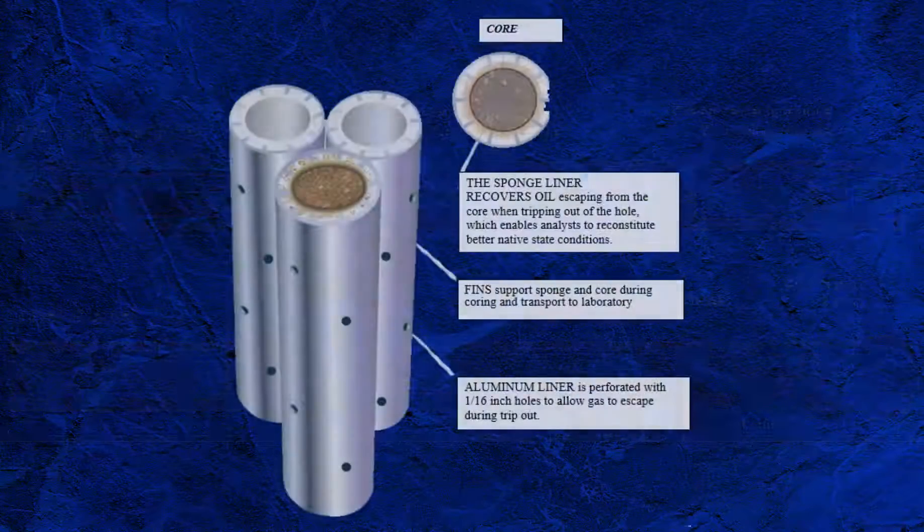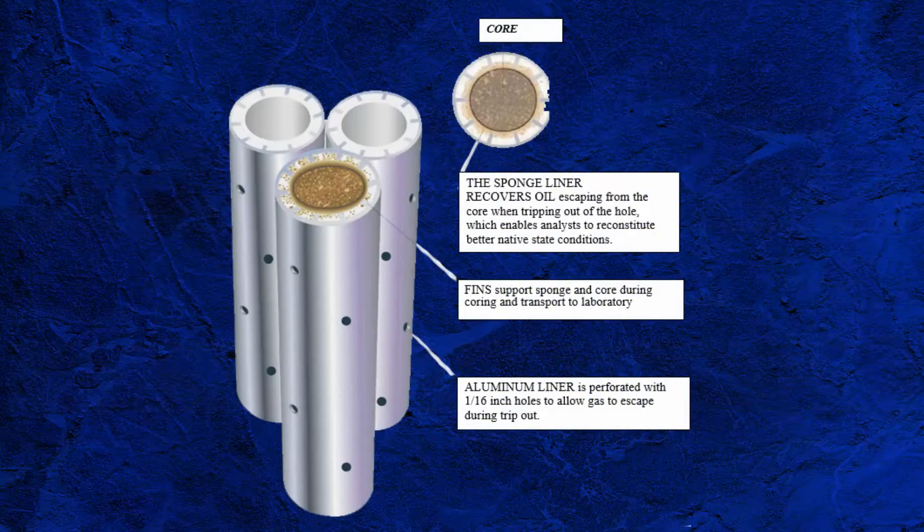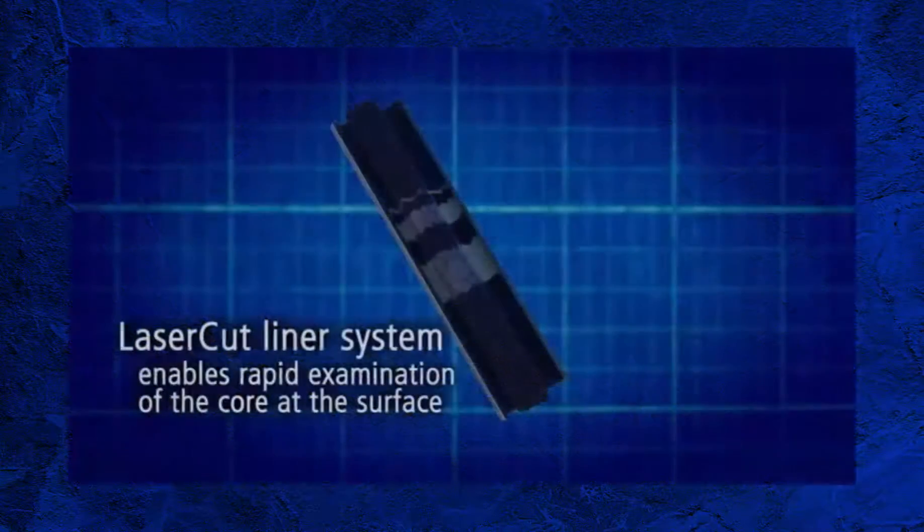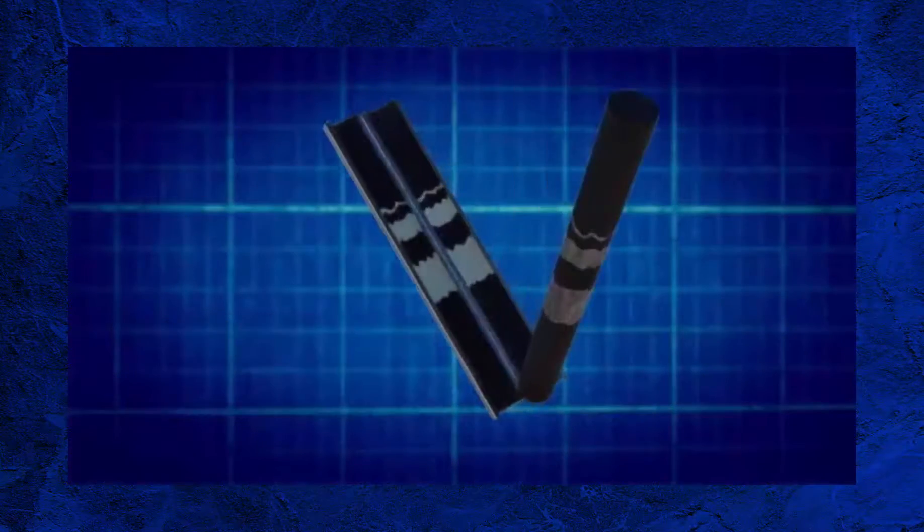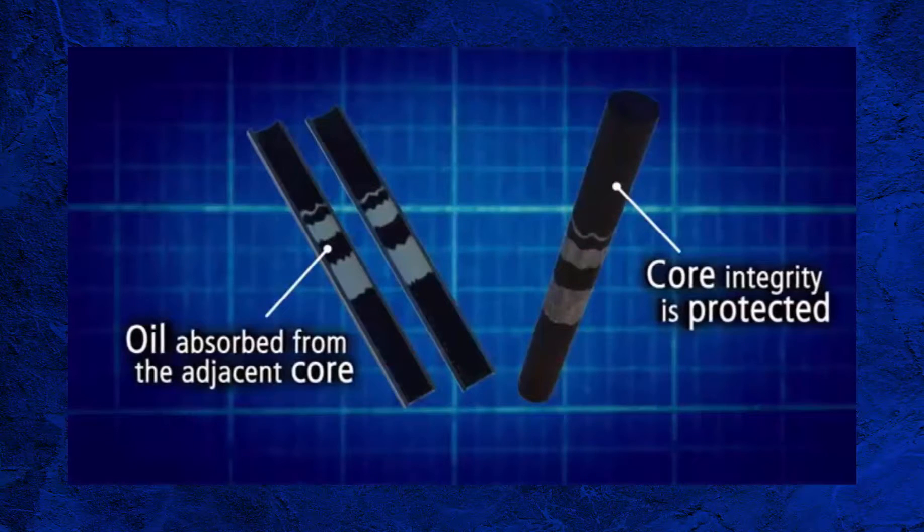Sponge coring can be considered a compromise of the pressure coring system. The aim of the sponge coring system is to capture the oil that would normally be lost to the wellbore during trip-out. This allows for a more accurate calculation of oil saturation.